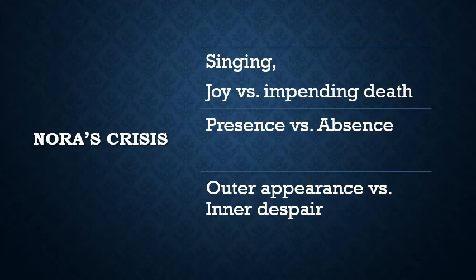On the one hand, she's singing and expressing joy. But on the other hand, there's this sense of impending doom — impending death. She only has a short time left to live, and she doesn't want to reveal that to Torvald. There's also the opposition between presence and absence: she's here now — 'here is your song lark' — but in 31 hours she'll be gone and gone forever, or at least that's how she's planning, if she's going to kill herself or if something is going to destroy her way of life.